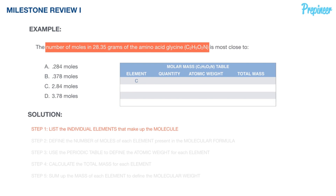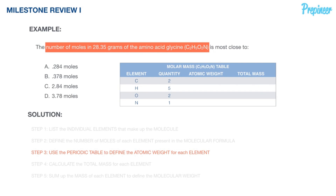We'll list the individual elements of our molecule. The molecular formula of glycine given in the problem statement is C2H5O2N, meaning we have carbon, hydrogen, oxygen, and nitrogen. The number of moles of each element is read directly from the formula: two moles of carbon, five moles of hydrogen, two moles of oxygen, and one mole of nitrogen.